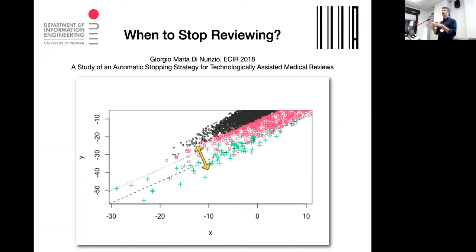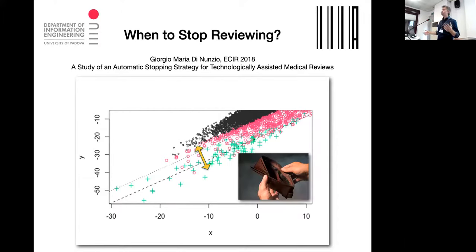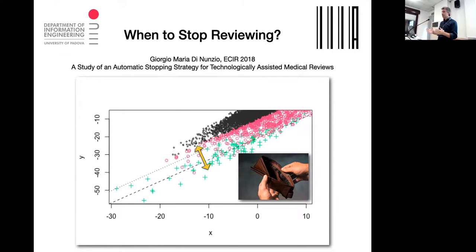The idea is simply to sweep the most favorable area and stop when we finish the money. We fix a number of documents we're able to read — 100, 200, 500, 1000 — and stop at that point no matter what, because we've exhausted our resources.